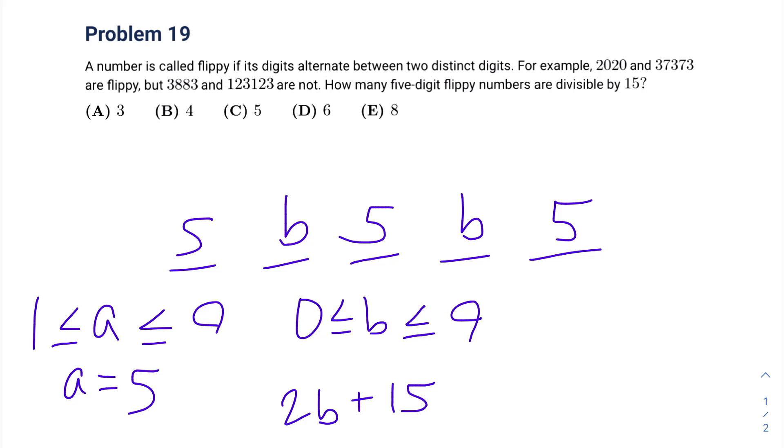If the sum of our digits is divisible by 3, then our number is divisible by 3. So all we have to do is find a B for which 2B plus 15 is divisible by 3.